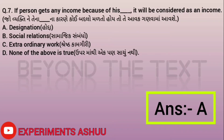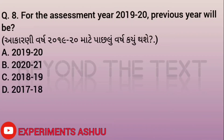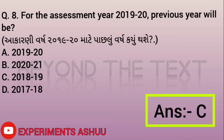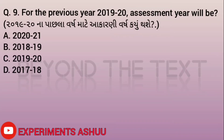Question eight: For the assessment year 2019-20, what will be the previous year? If 2019-20 is the assessment year, then 2018-19 will be the previous year. So our answer is 2018-19.